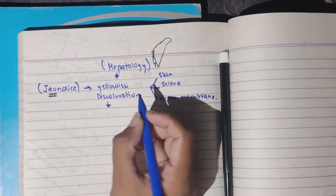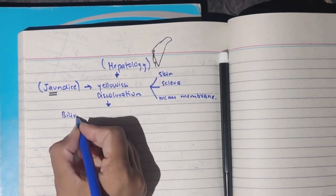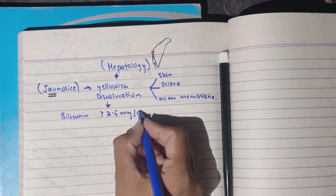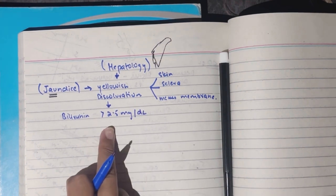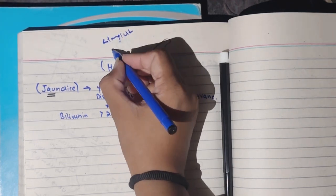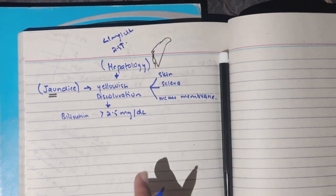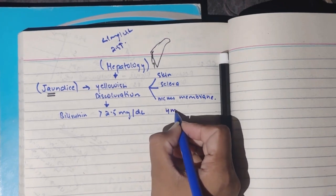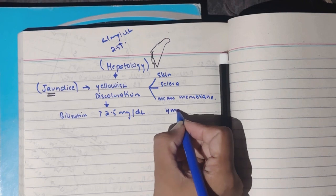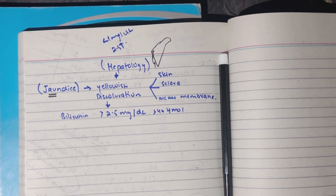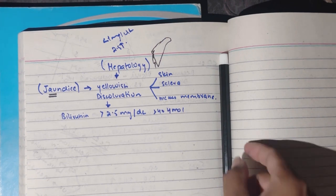To explain jaundice precisely: when the bilirubin concentration is more than 2.5 mg per deciliter, we call it jaundice. Normally, the bilirubin concentration in your plasma is 1 mg per deciliter or even less. When it is more than 2.5 mg per deciliter, we declare it clinically detectable jaundice. If expressed in micromoles, the threshold becomes more than 40 micromoles.